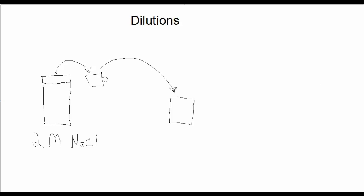I put it in a smaller container, and then what I add to that new volume is some water. Or you could simply tip it over and put some in the new container and then add some water. The point is: we take a small quantity of concentrated solution, put it in a new volume, and then we add water to dilute it.